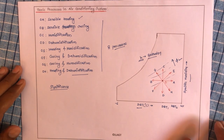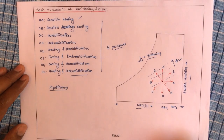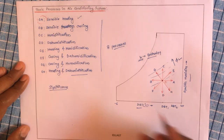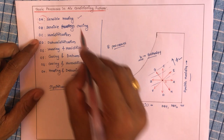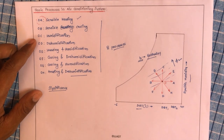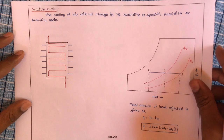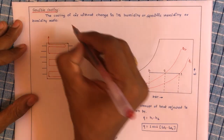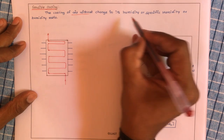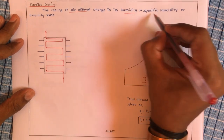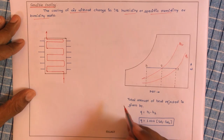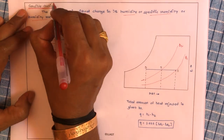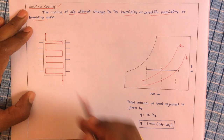Hello friends, welcome back to our online course on refrigeration and air conditioning. In the last lecture we completed sensible heating. In this lecture we will cover sensible cooling. Sensible cooling is the cooling of air without change in its humidity, specific humidity, or humidity ratio. It is similar to sensible heating — only here, instead of heating, we are going for the cooling process.